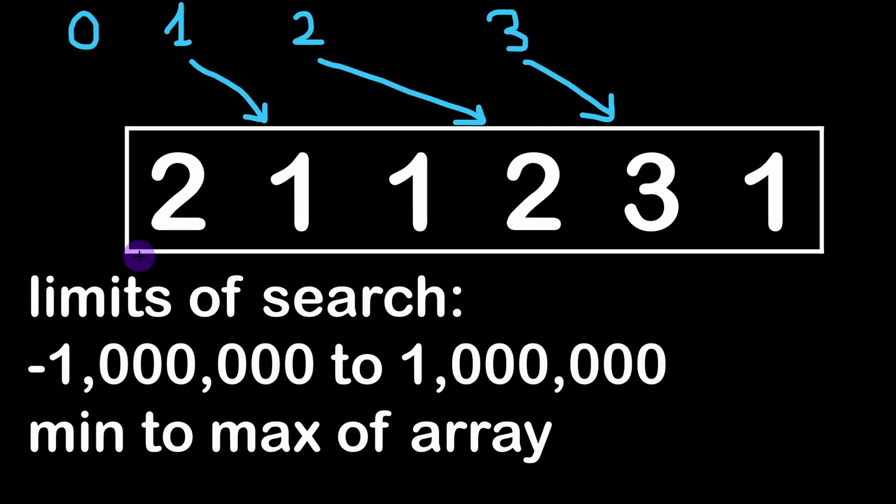We could for example take minus 1 million to plus 1 million as two limits because these are the limits as described by the problem on the codility website. But we can notice immediately that testing 2 million integers going from minus 1 million to plus 1 million for small arrays is a big waste of time. And even for large arrays you don't have to test all of these numbers. Actually it's the worst method you could think of in the sense that it is the least efficient.